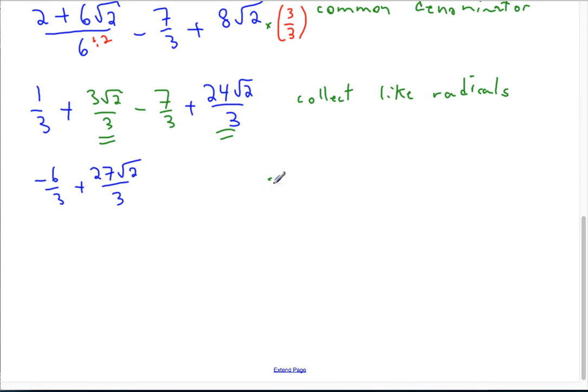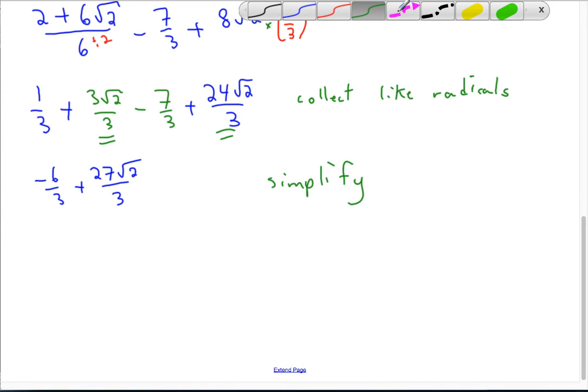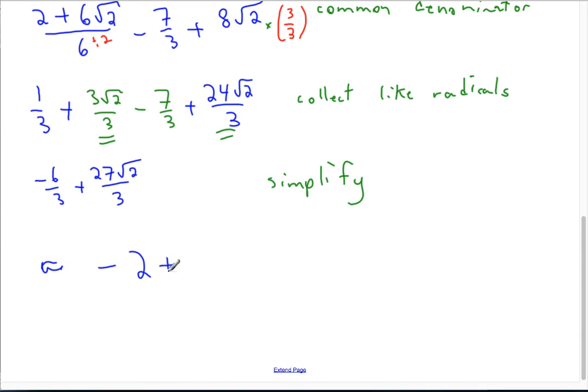And finally, what you want to do is simplify. If we take our final result, negative 6 over 3 is negative 2. And 27 divided by 3 reduces to 9 root 2.